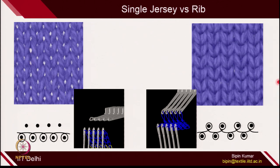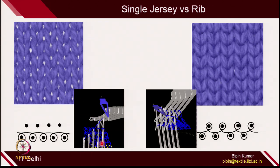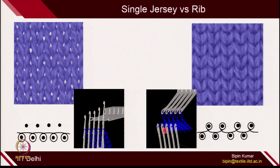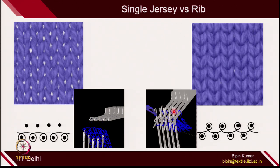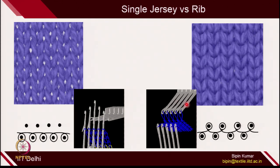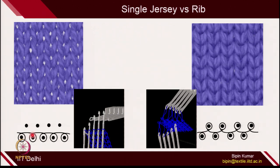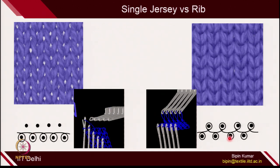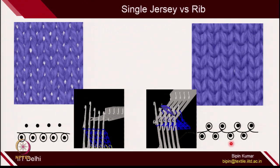If you see the fabric appearance, in single jersey fabrics there are holes because it is not that dense. But if you see the double jersey fabrics, it is very dense because you have multiple loops on the front and back side. If you want to see the animations, here one bed is operated for single jersey and here both the beds are operated for rib structure.